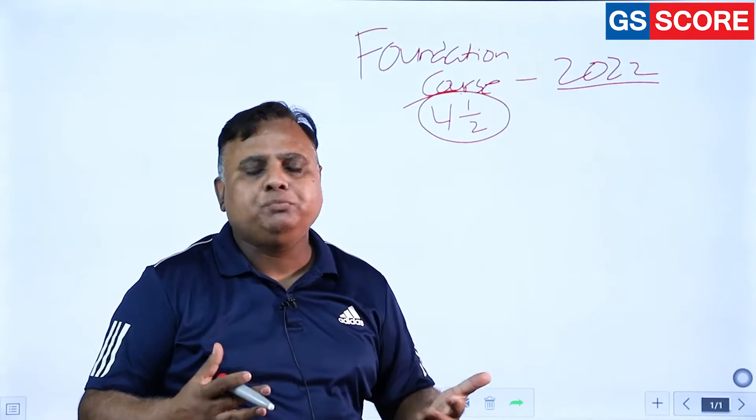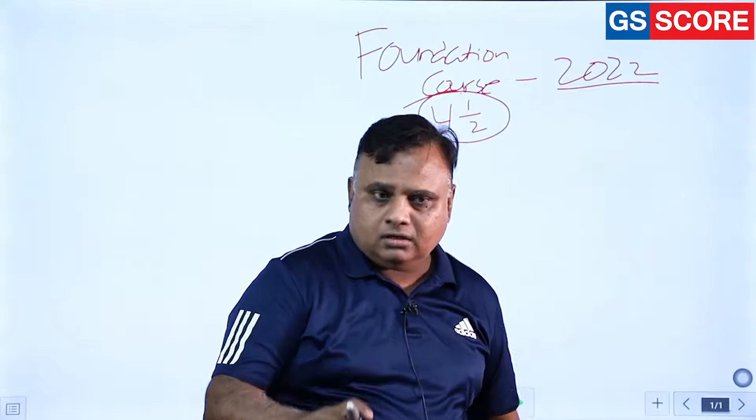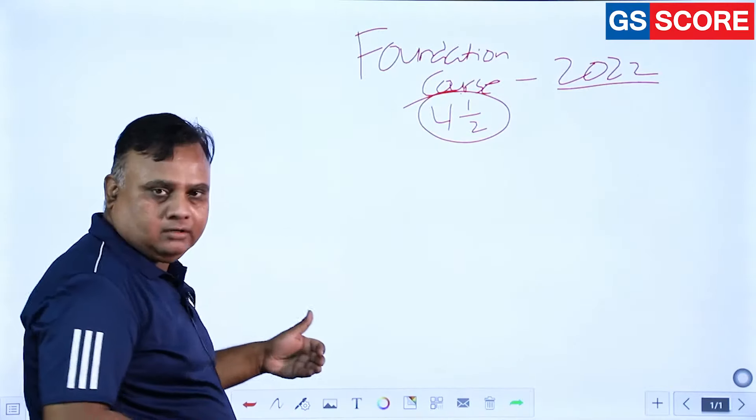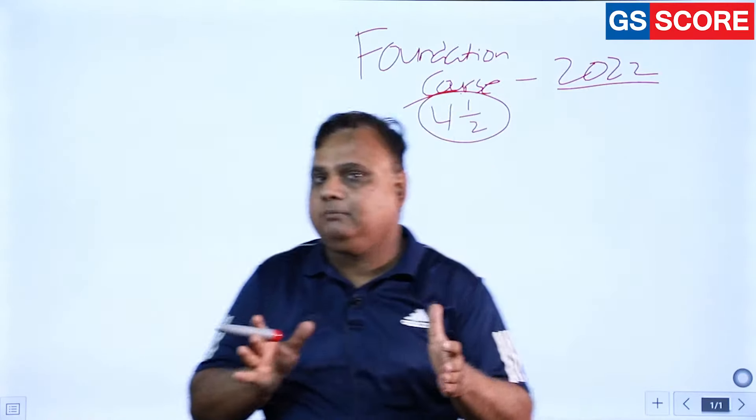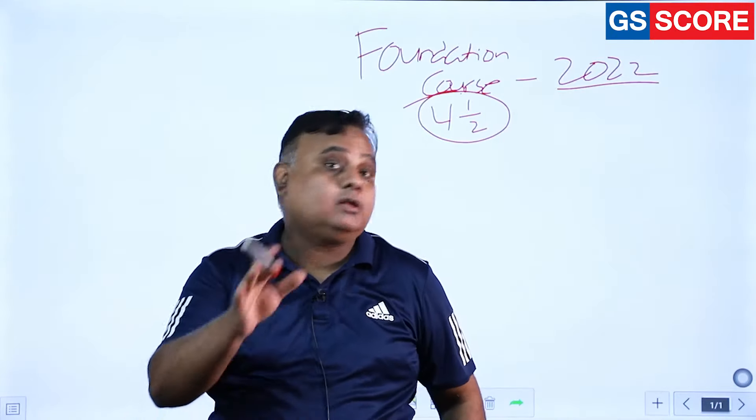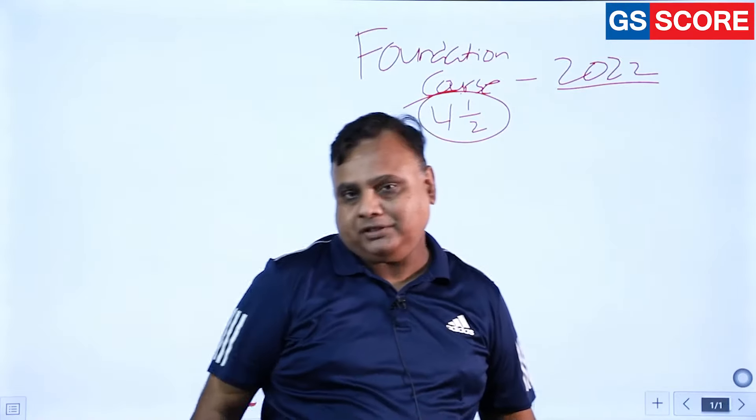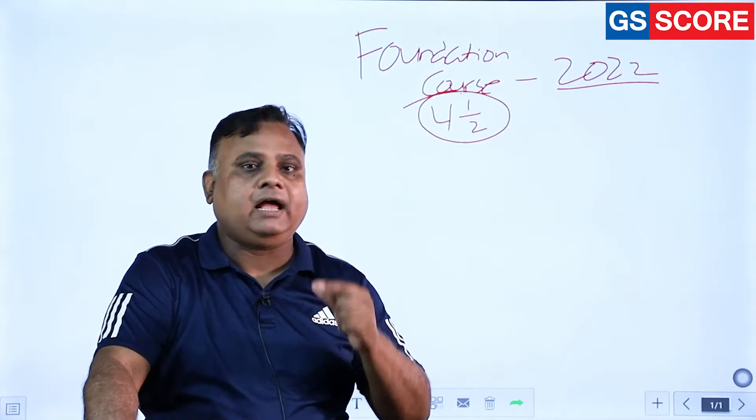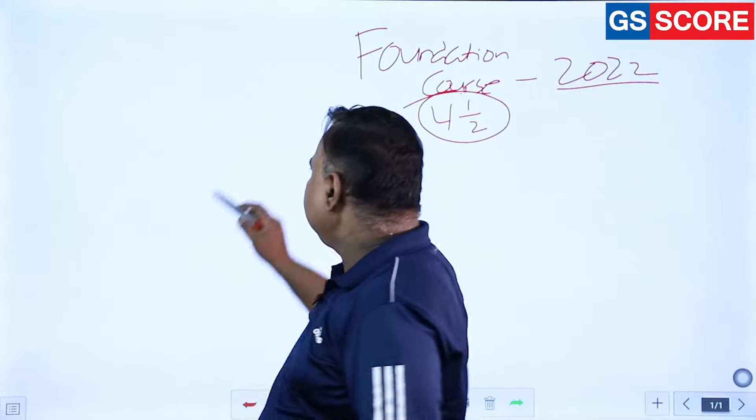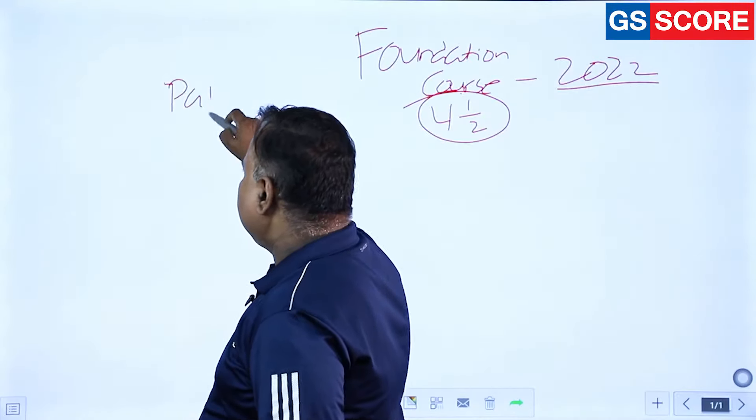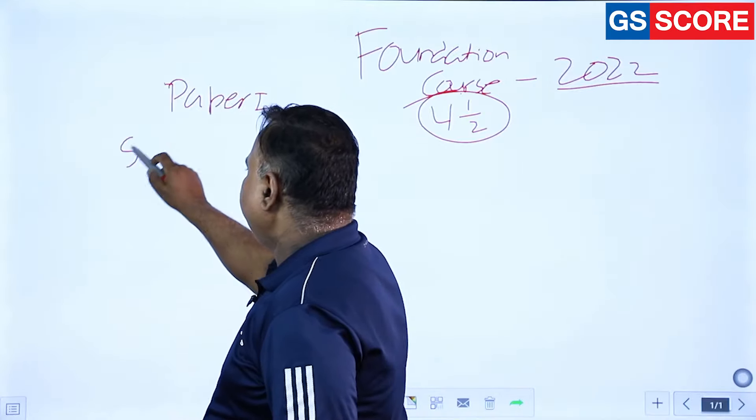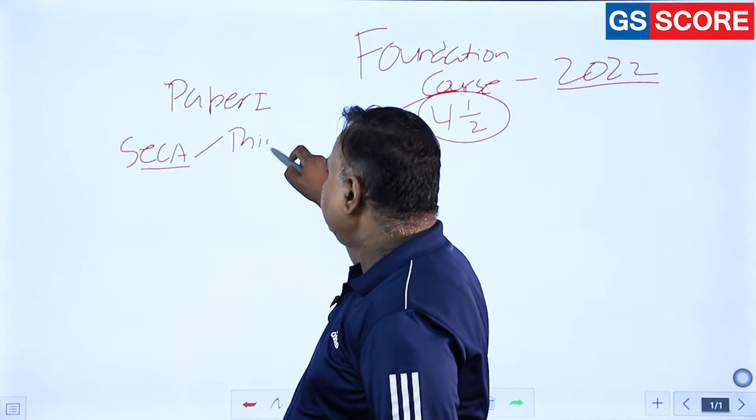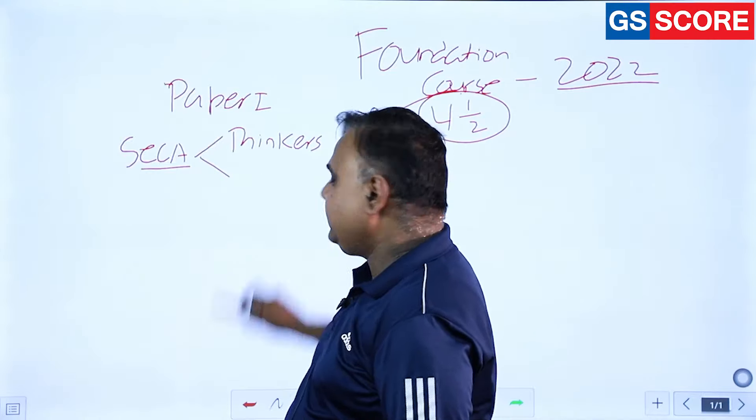Once you are comfortable with the basics and fundamentals, then only we will be maintaining order. There is a particular order of studying political science and international relations, not the order given in the syllabus but the order in which questions are being asked by UPSC. First you have to go through, as you know, in paper one there is a section A which mainly consists of political theories, ideologies, thinkers.